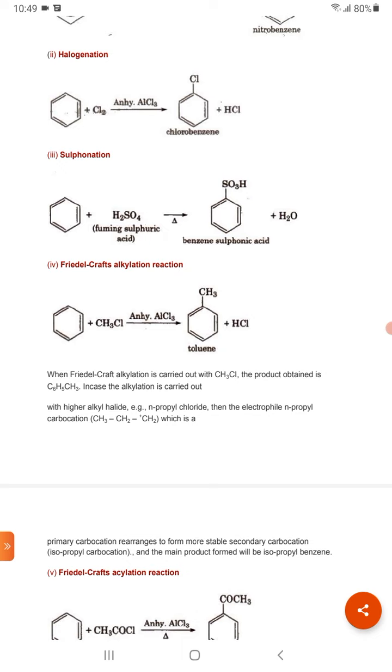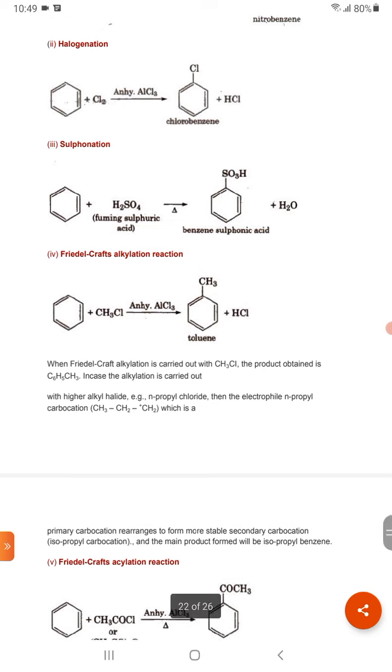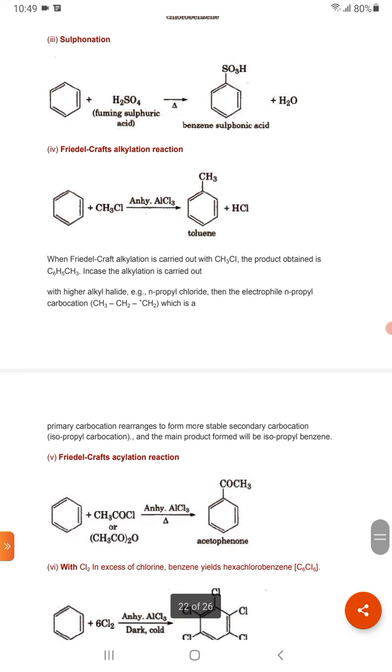Next Friedel-Crafts alkylation reaction. When you take benzene and it is reacted with alkyl halide then toluene is formed. And this is known as Friedel-Crafts alkylation reaction.